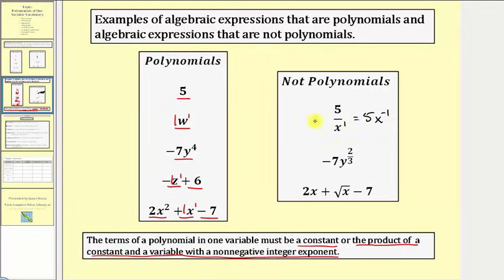Next we have negative seven y to the two-thirds. Because the exponent is two-thirds, and two-thirds is not a non-negative integer, this is not a polynomial.